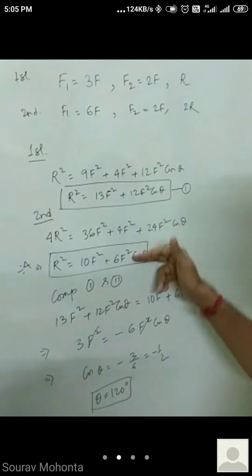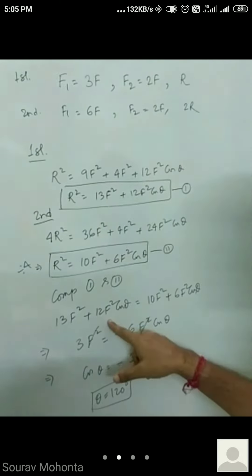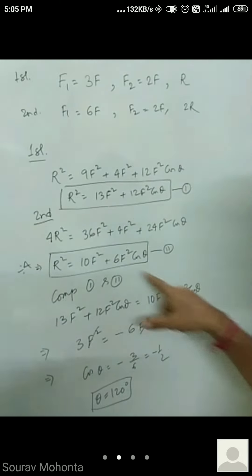Now comparing 1 and 2, that is 13F square plus 12F square cos theta is equal to 10F square plus 6F square cos theta.